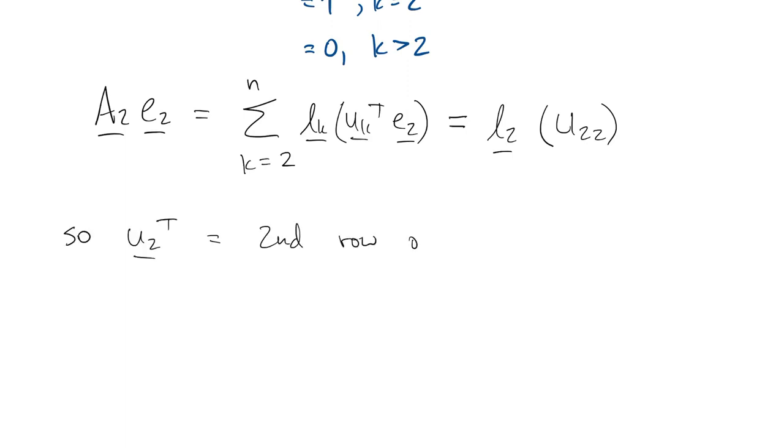So now we know the second row of U, and we know the second column of L. And you see how we can continue this.